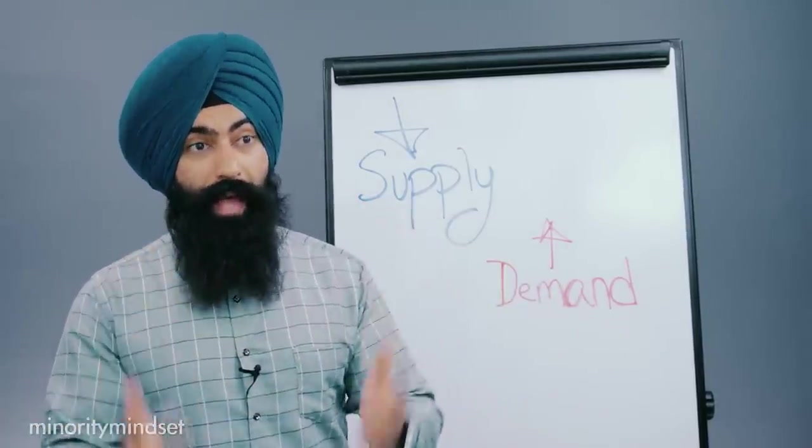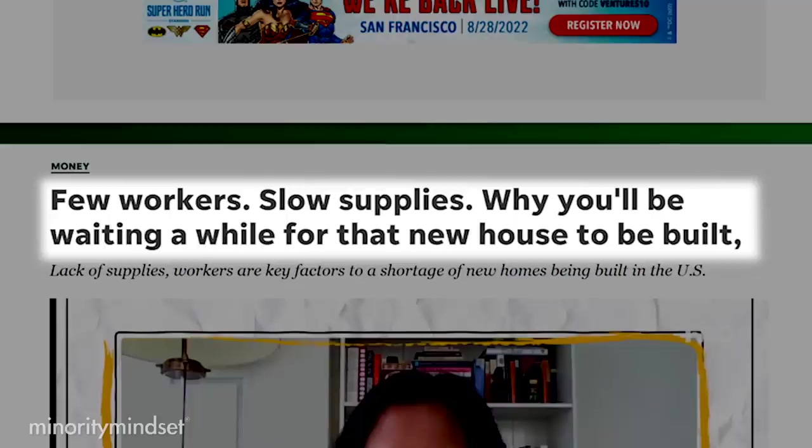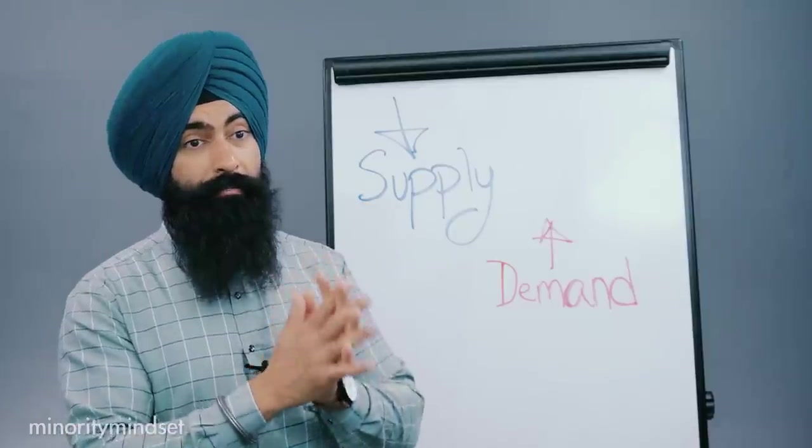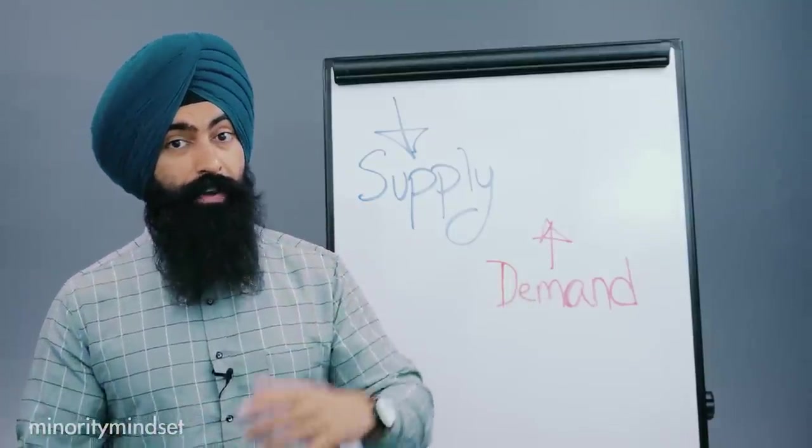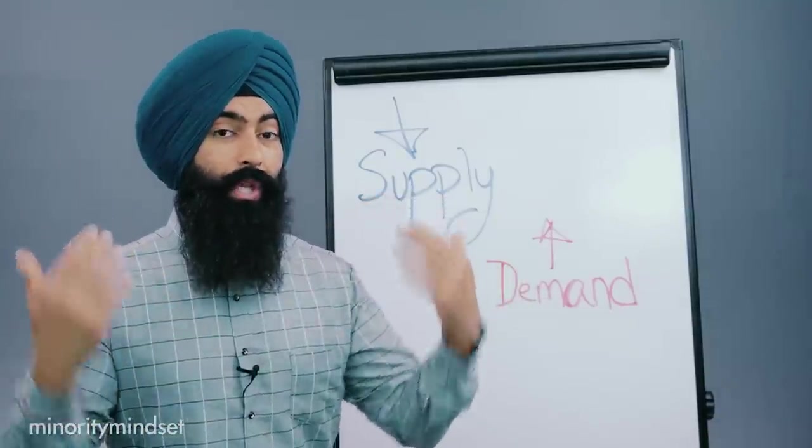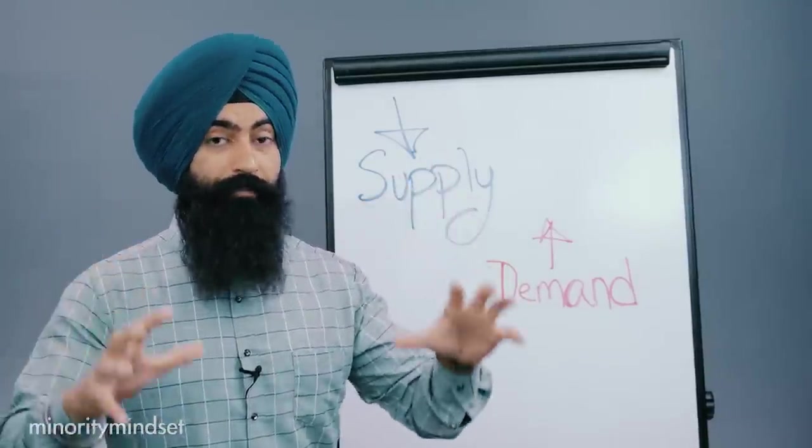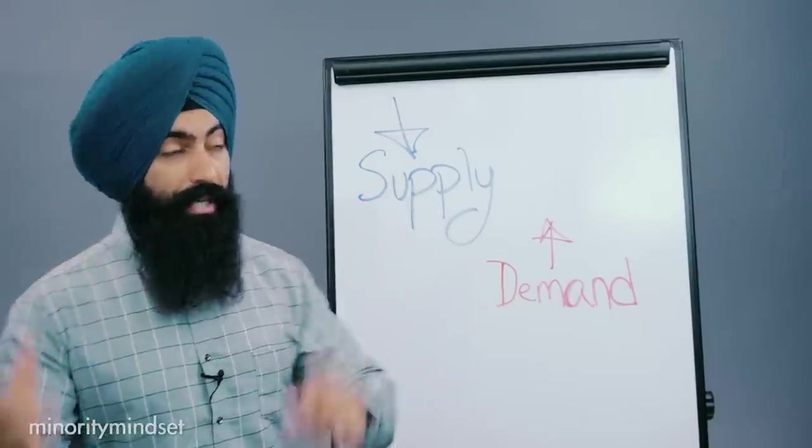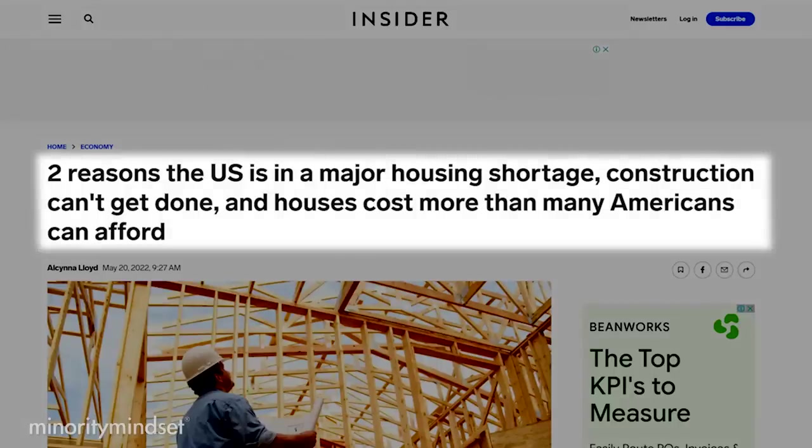Then on the flip side of that, we also had and have a labor shortage going on, meaning builders and construction workers are having a tough time finding more workers to help build homes, which has made building homes much more expensive and much more timely, meaning it takes a lot longer to build a home, causing the inventory of homes to stay small. And this has led to the abnormally small supply of homes.